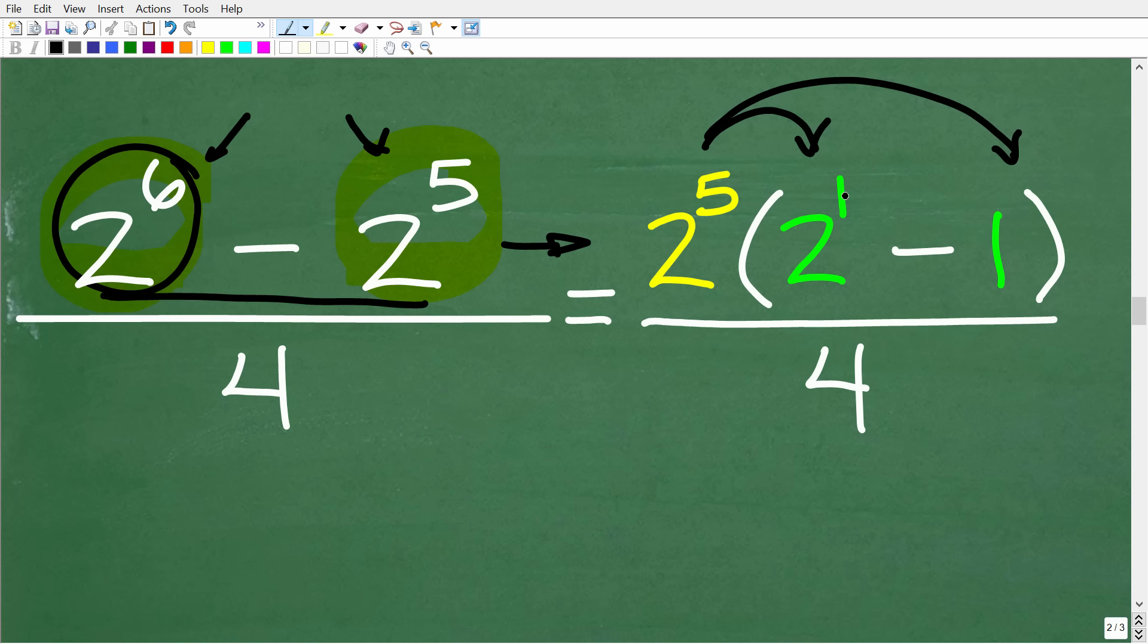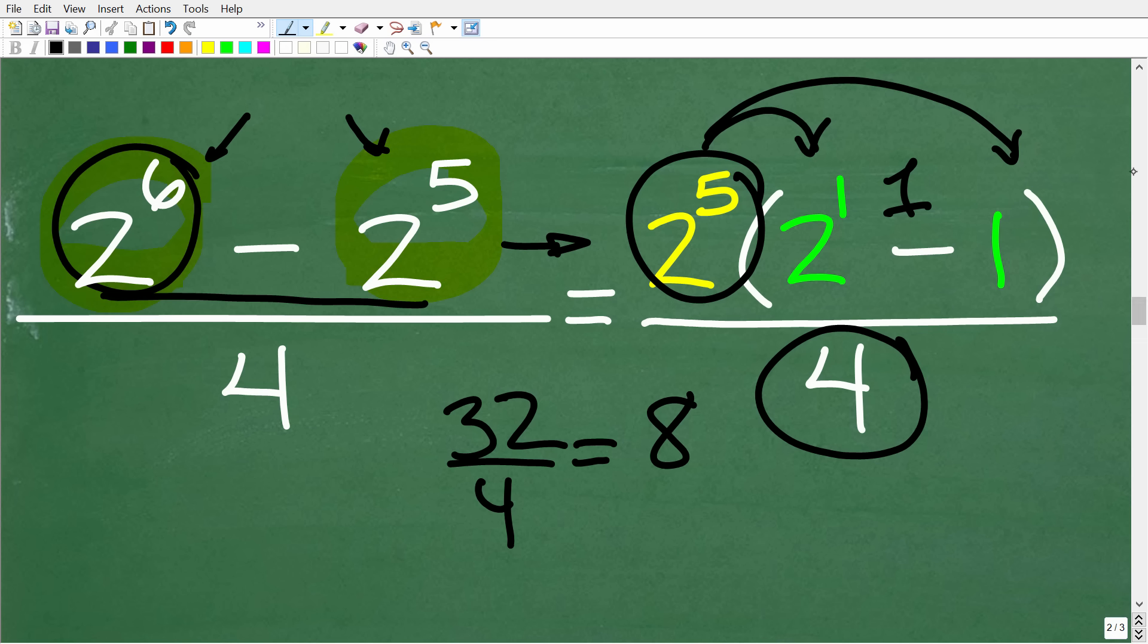Okay, so 2 to the 1st is what? Well, that's just 2. So we have 2 minus 1, which is 1. So what we really have here is 2 to the 5th divided by 4. Now, of course, we know that 2 to the 5th is 32. So now we have 32 divided by 4, which is 8.